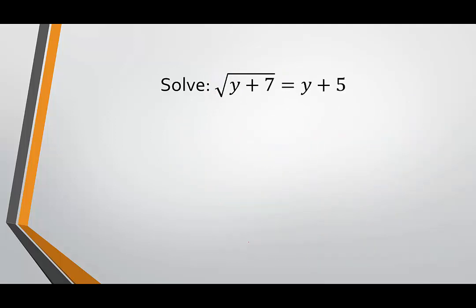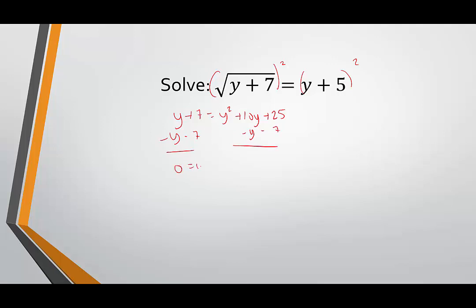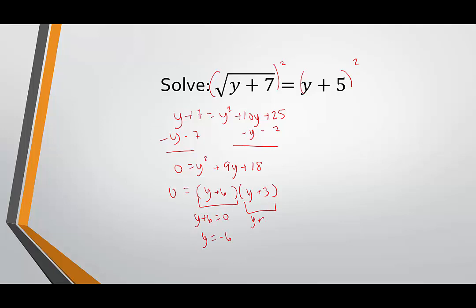In our last example, the radical is already by itself. We square both sides to get y plus 7 equals y squared plus 10y plus 25. Setting it equal to 0 gives 0 equals y squared plus 9y plus 18. We're looking for a target product of 18 and a target sum of 9 — that's 6 and 3 — giving factors (y plus 6)(y plus 3). Setting each equal to 0 gives y equals negative 6 and y equals negative 3. We want to check whether these are solutions or extraneous.